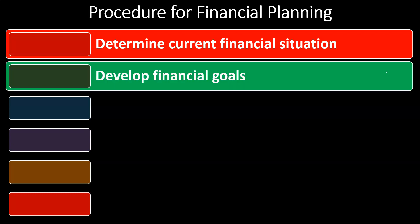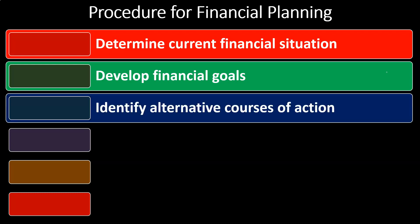Then we want to develop our financial goals — think about what our goals are. We can break them out into short-term, intermediate, and long-term goals. Then we want to identify alternative courses of action, which is where we take a step back and think about basically different kinds of actions or courses of action that we can take.